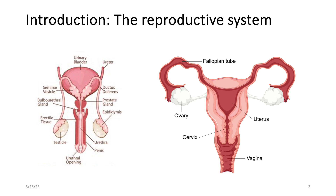By introduction, the gonads can be male-oriented or female-oriented. Looking at the male first, the testis is the male gonad, and the penis is the external genitalia. For the female reproductive system, the ovary is the gonad. The vagina has a canal, so it is more internal. The external genitalia of the female reproductive system would be mainly the labia majora and minora.